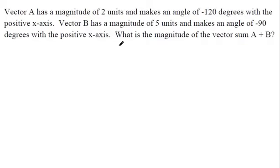Vector A has a magnitude of 2 units, makes an angle of negative 120 degrees with the positive x-axis. So let's draw that real quick. There we go.